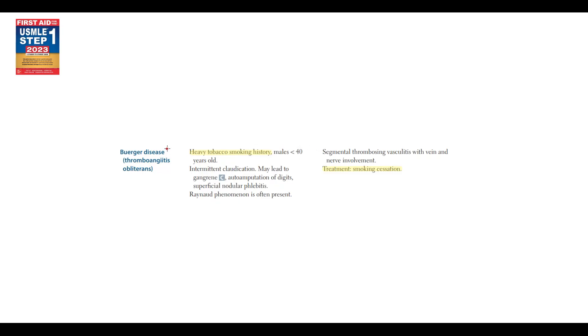Buerger disease, or thromboangiitis obliterans, is a unique form of vasculitis where the most significant risk factor is the history of heavy tobacco smoking. It's the only vasculitis in which smoking plays a crucial role.